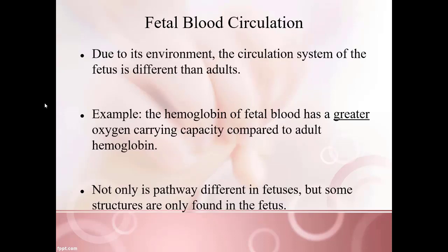The next major topic is fetal blood circulation. Because of the environment the fetus is in, its circulation system must be different from an adult's. For example, hemoglobin within a fetus has a much higher oxygen-carrying capacity compared to an adult, to fuel all the rapid cell division and growth occurring. Not only is the blood pathway different in fetuses, but there are structures only found within the fetus that are not present in a newborn or adult — because the fetus is basically residing in a fluid-filled sac, so certain things must be done differently.